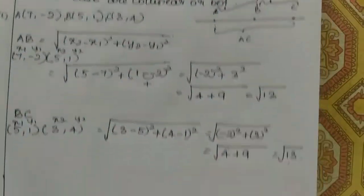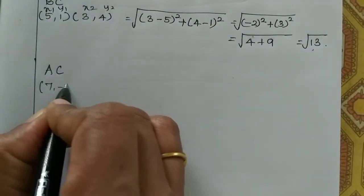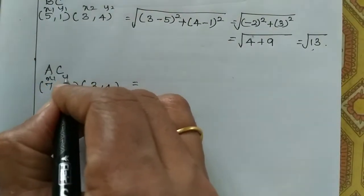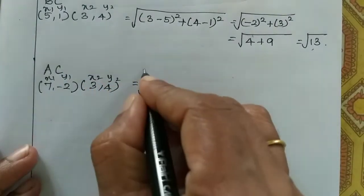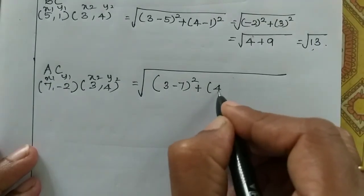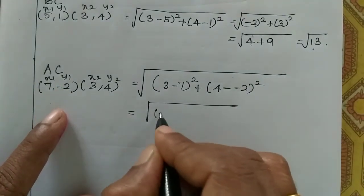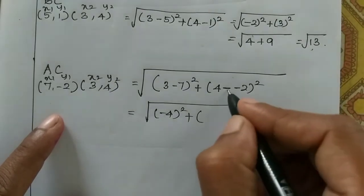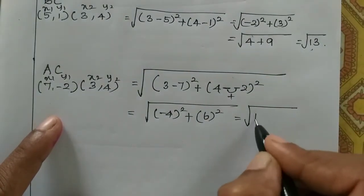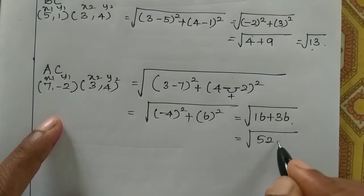So now AB and BC are both root 13. Now AC length: A is (7, minus 2) and C is (3, 4). So root of (x2 is 3 minus x1 is 7) the whole square, plus (y2 is 4 minus y1 is minus 2) the whole square. So 3 minus 7 is minus 4, whole square, plus minus into minus plus, 4 plus 2 is 6, squared, which equals root of 16 plus 36, equals root 52.